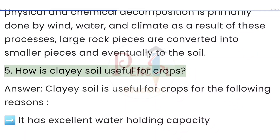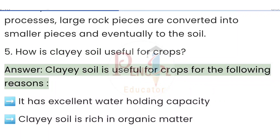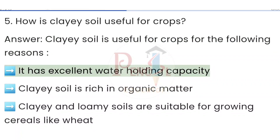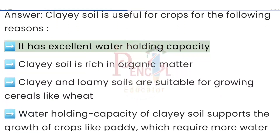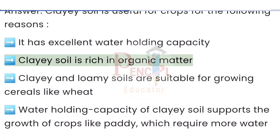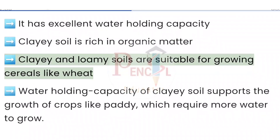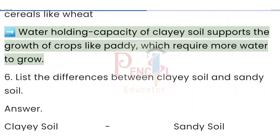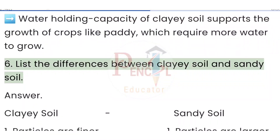Question 5: How is clay soil useful for crops? Answer: Clay soil is useful for crops for the following reasons — it has excellent water holding capacity; clay soil is rich in organic matter; clay and loamy soils are suitable for growing cereals like wheat; and the water holding capacity of clay soil supports the growth of crops like paddy, which require more water to grow.